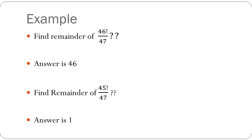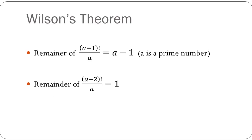So the only precaution that you need to take is that the denominator, which is a, shall always be a prime number. And you can use the two formats of Wilson's theorem, which are (a-1)! upon a is equal to a-1, and (a-2)! upon a is 1.